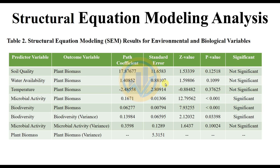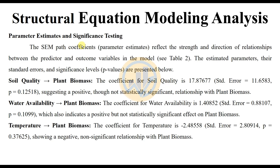The explanation for Table 2 — parameter estimation and significance testing in the Structural Equation Model. The path coefficients and parameter estimates reflect the strength and direction of relationships between the predictor and outcome variables. The coefficient for Soil Quality predicting Plant Biomass is 17.87677, with a P value of 0.12518, suggesting a positive though not statistically significant relationship with Plant Biomass.